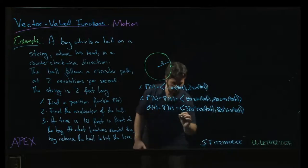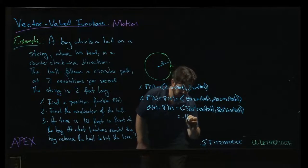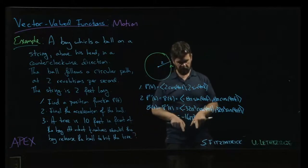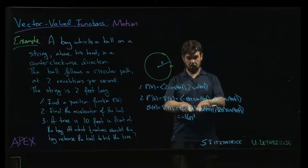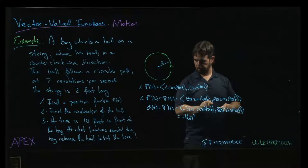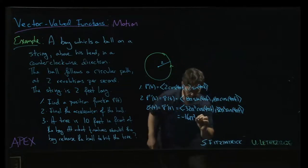Now, if I factor out -16π² from the acceleration, I'm left with (2cos(4πt), 2sin(4πt)), which is exactly r(t). So r''(t) = -16π² · r(t).